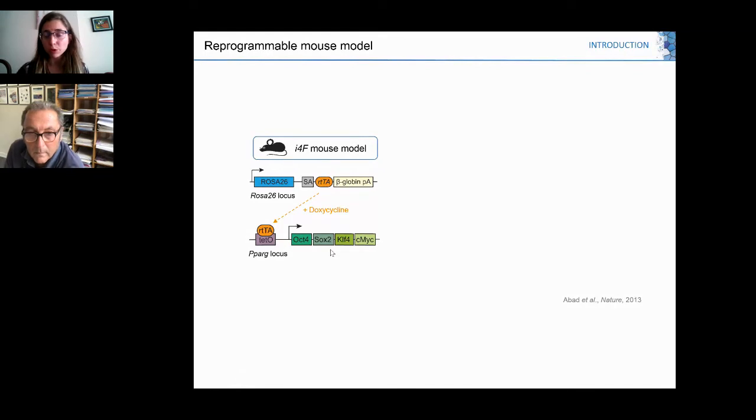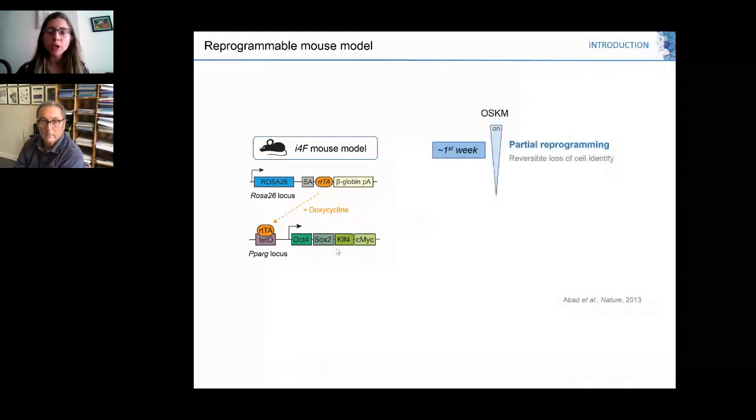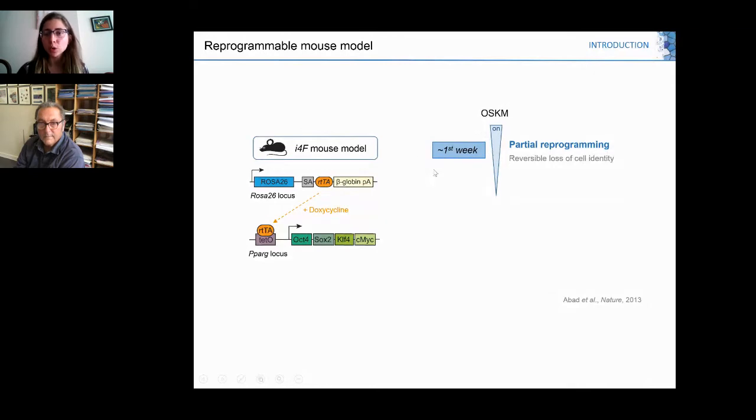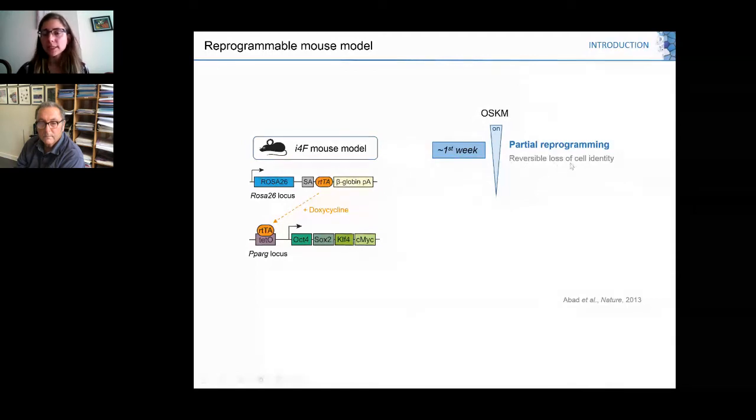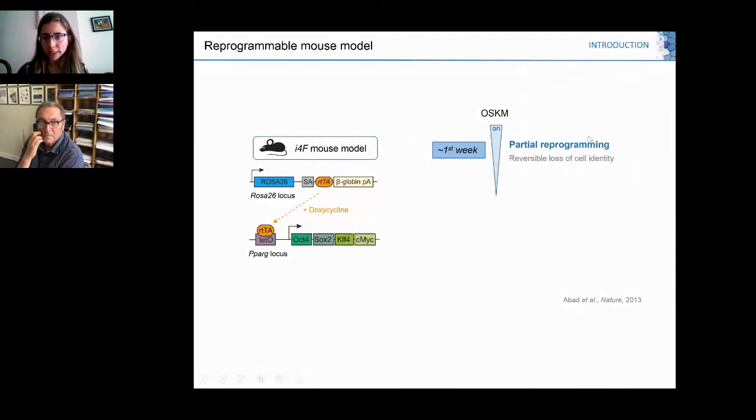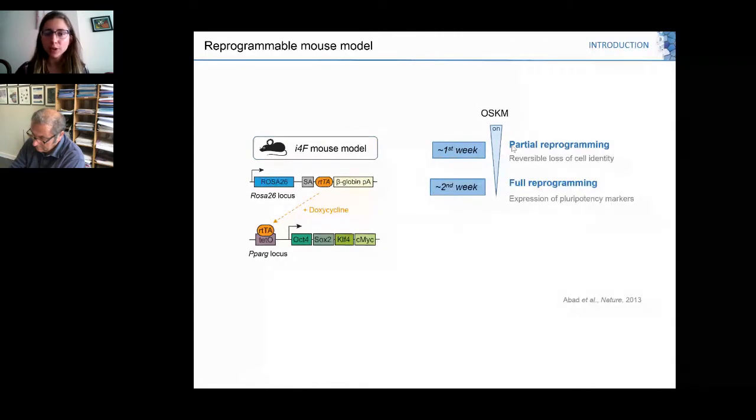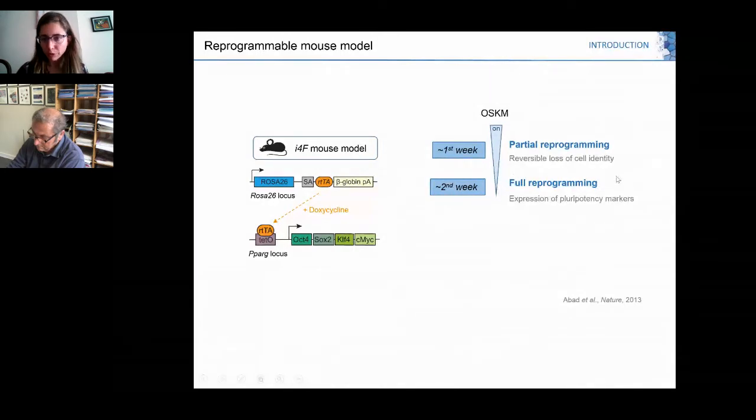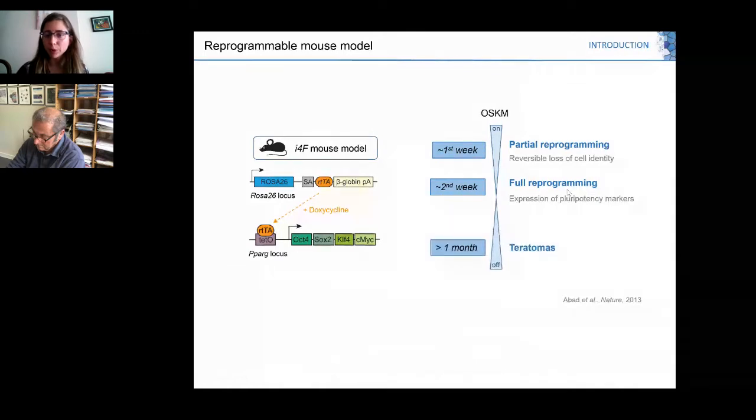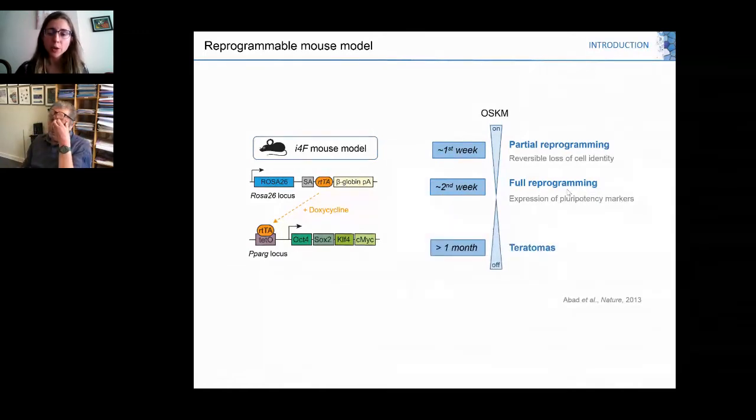The process of in vivo reprogramming in our mouse model has been well documented. After one week of expressing OSKM, cells undergo partial reprogramming, characterized by reversible loss of cell identity. If we leave OSKM expressed for longer, basically two weeks, few cells reach full reprogramming characterized by expression of pluripotency markers such as Nanog. If we leave these pluripotent cells to continue expanding, we end up with teratomas around one month.